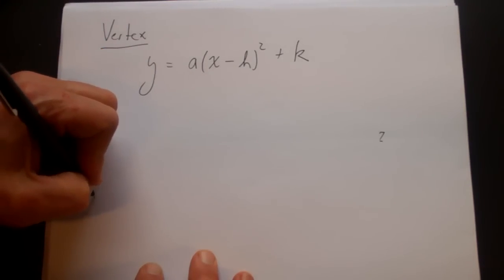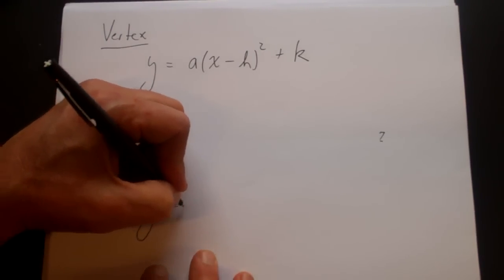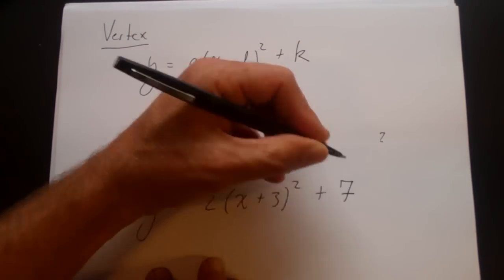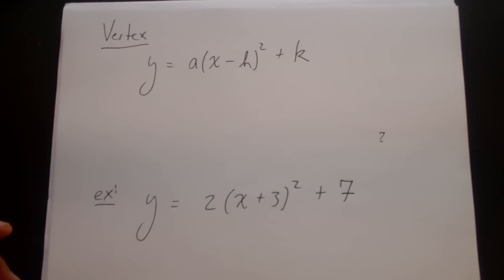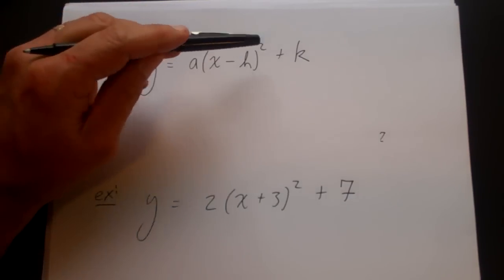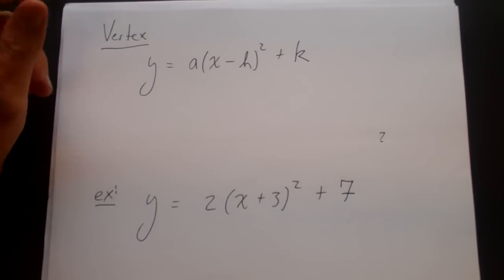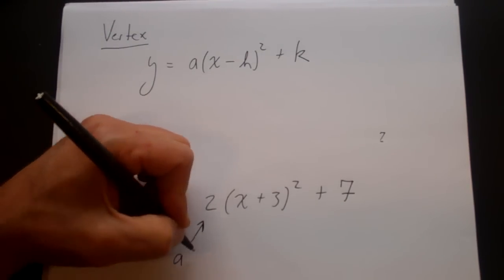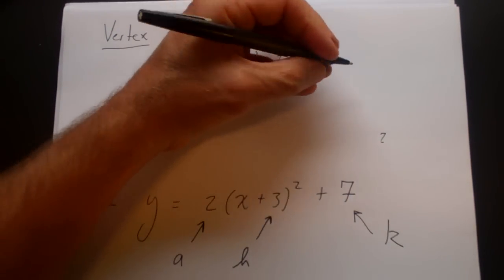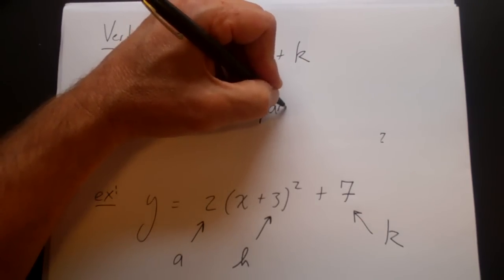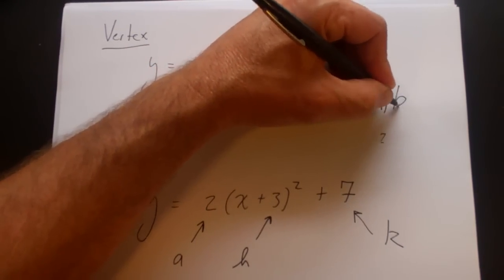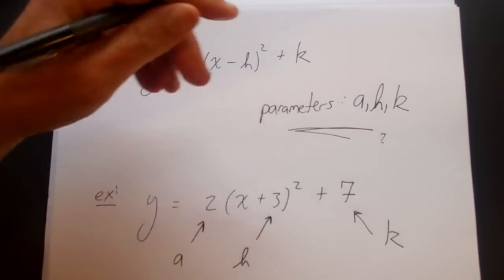Let's do a simple example. An example might be y is equal to 2 times x plus 3 squared plus 7. If you notice, there is a negative in front of the h and a positive in front of the k, because we are going to treat h and k somewhat differently. This is a, this is h, and this is k, and these are called parameters. The parameters a, h, and k will tell us what this graph looks like.